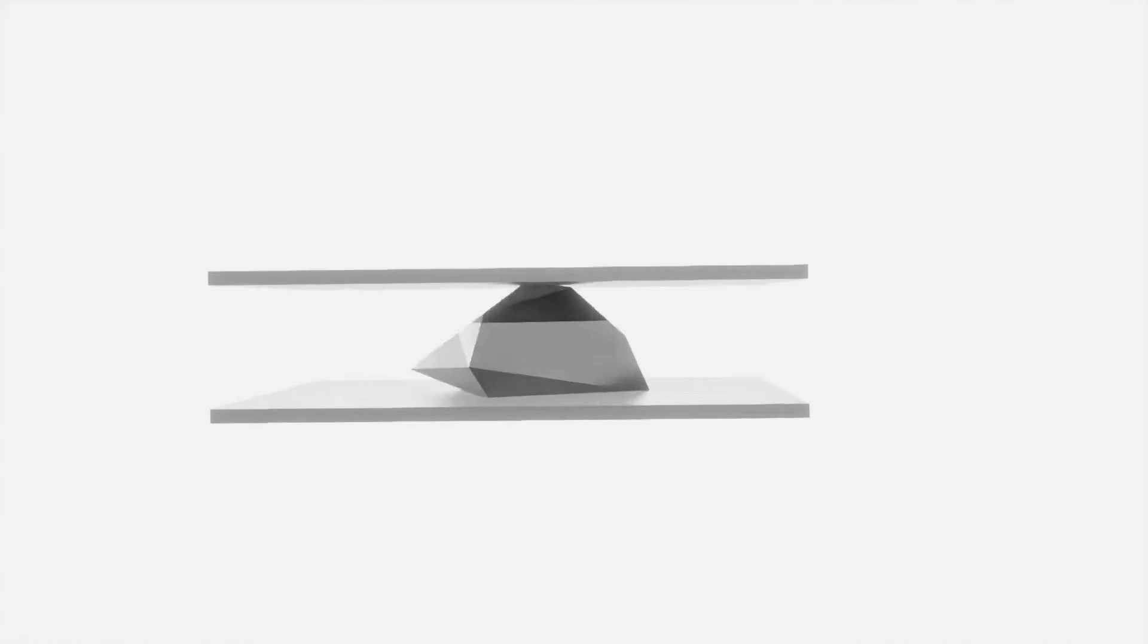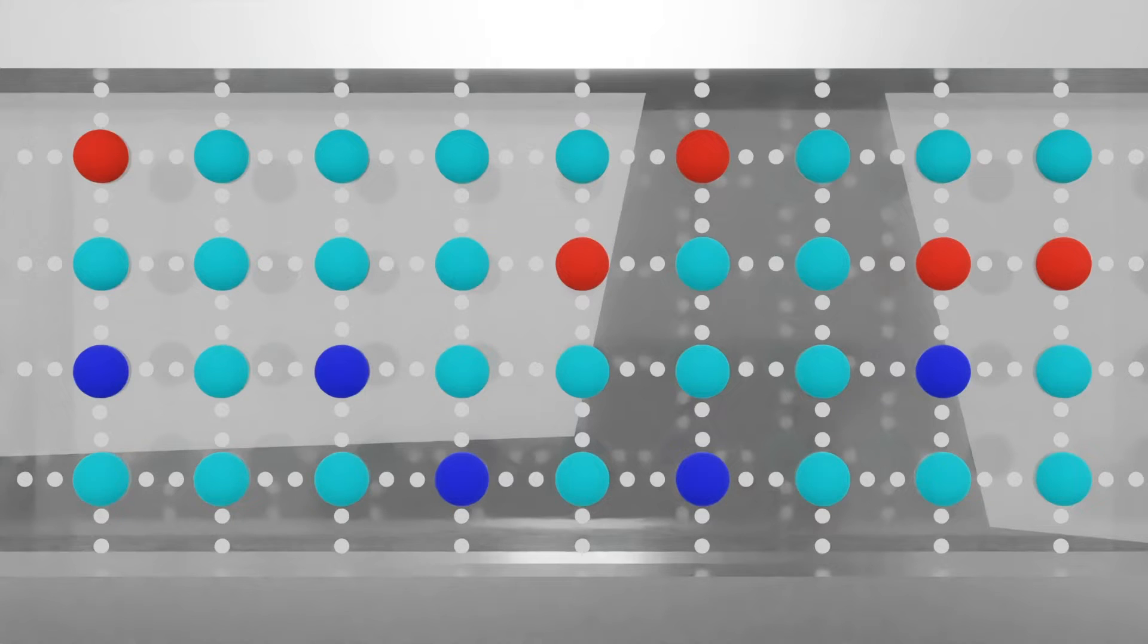In each solar cell, crystalline silicon is sandwiched between two conductive layers. Each silicon atom is connected to its neighbors by four strong bonds, which keep the electrons in place so no current can flow.